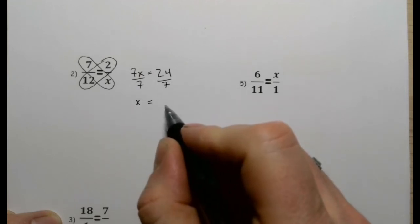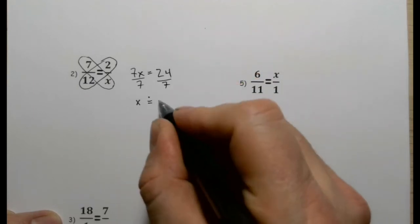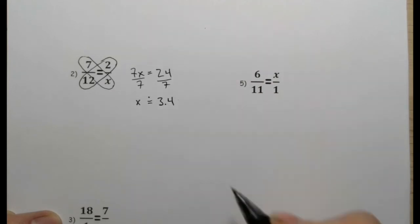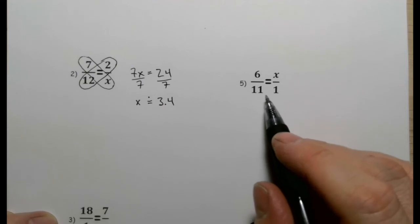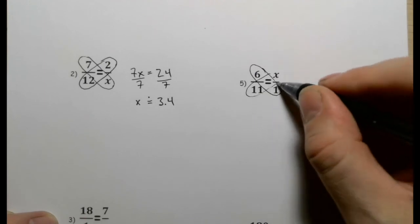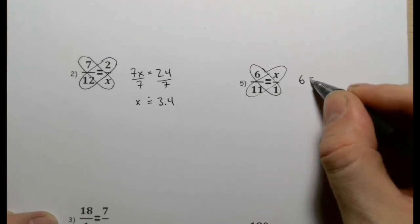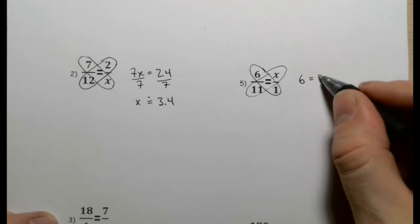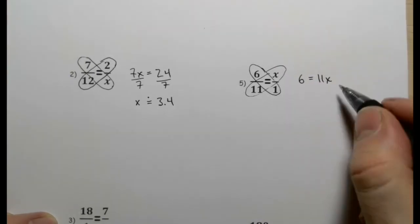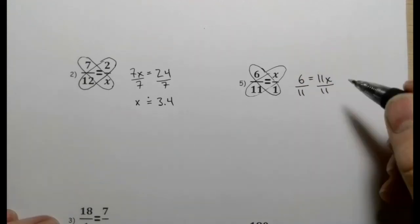For 18 over 1 equals 7 over x: multiply along — 1 times 7 is 7, and 18 times x is 18x. So x is approximately 0.4 — not exact, I have to round it. And then 180 over 2 equals x over 1: 180 multiplied by 1 is 180, and 2 multiplied by x is 2x. Divide both sides by 2 — in this case it's not approximate — 180 divided by 2 is 90, so x equals 90.